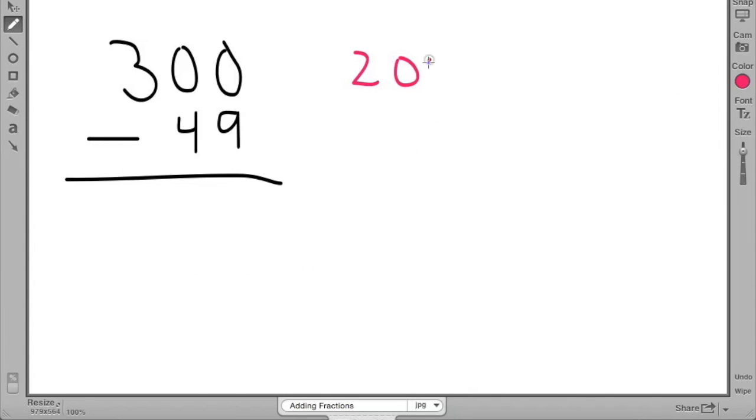In the previous problem, I decomposed 300 into 200 plus 90 plus 10. I can also do the subtraction decomposing 300 in a different way. I just want to make sure that I have numbers that are bigger than the 9 and bigger than the 40.